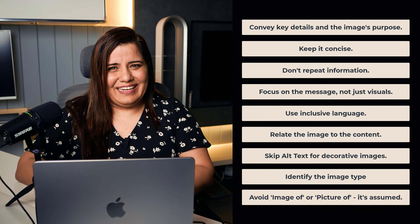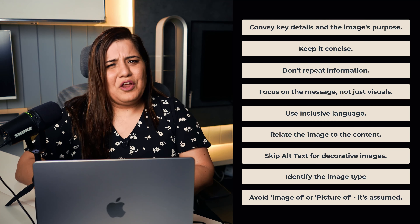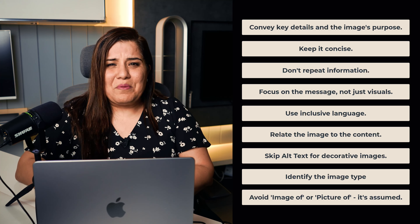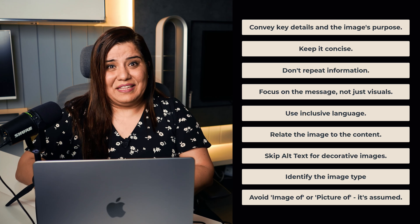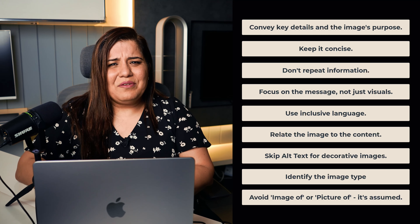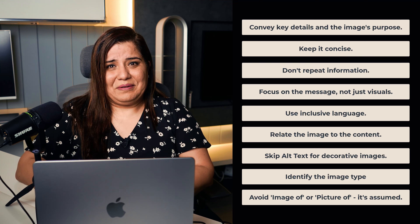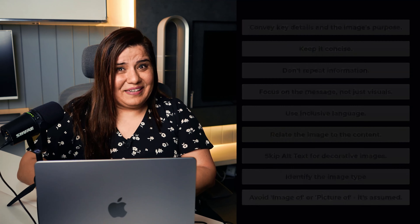And the last one is an easy fix: drop the 'image of' or 'picture of' in the description. It's cleaner that way and you can get straight to the story. So we've unpacked the essentials of alt text — we've covered our must-dos and please-don'ts. And it's time to jump into using ChatGPT for generating our alt text.